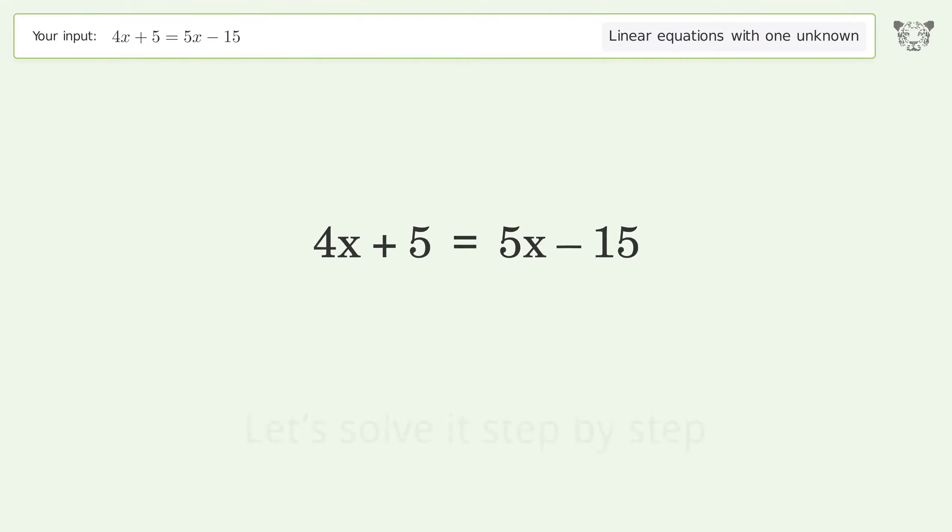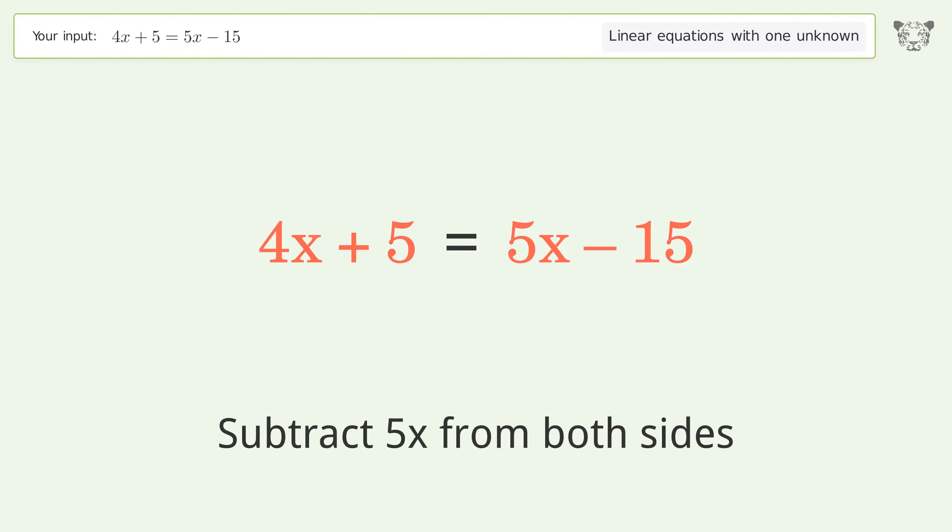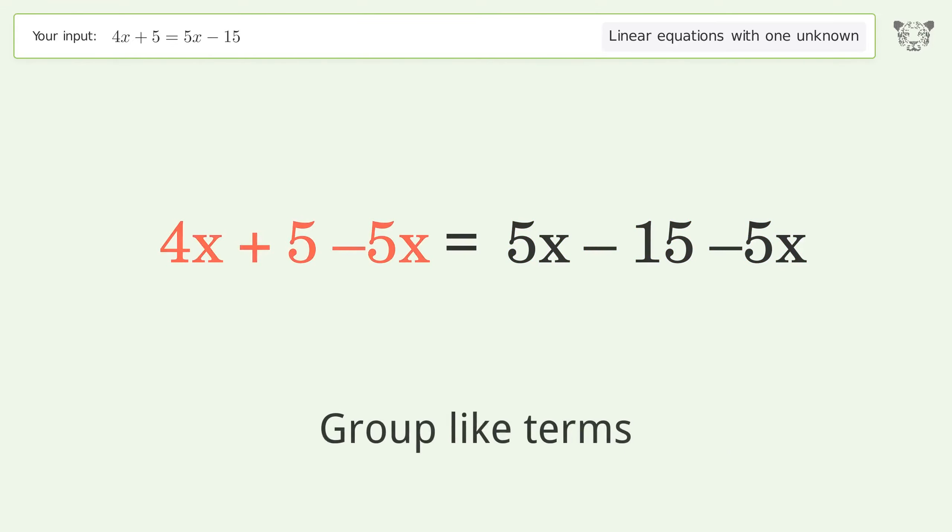Let's solve it step by step. Group all x terms on the left side of the equation. Subtract 5x from both sides. Group like terms.